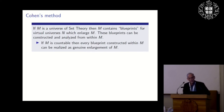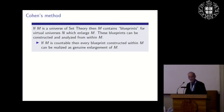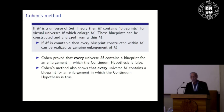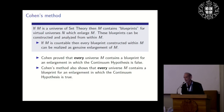A word about Cohen's method: if M is a universe of set theory, M contains blueprints for virtual universes that enlarge M. These blueprints can be constructed and analyzed within M. If M happens to be countable, every blueprint constructed within M can be realized as a genuine enlargement of M. Cohen proved that every universe contains a blueprint for an enlargement in which the continuum hypothesis is false — and his method also gives a blueprint for an enlargement in which it is true.